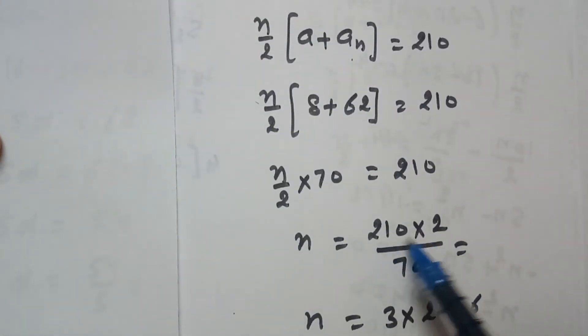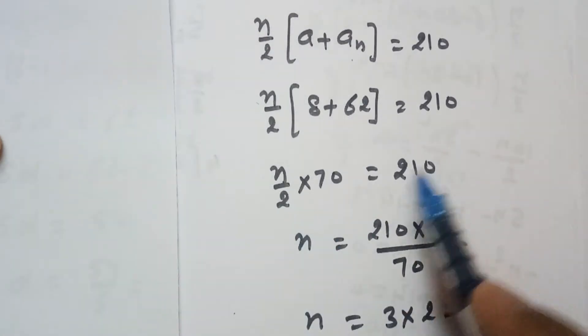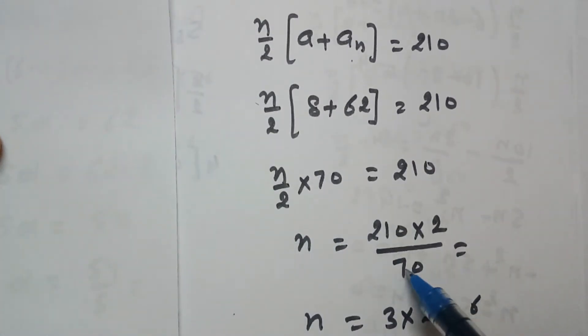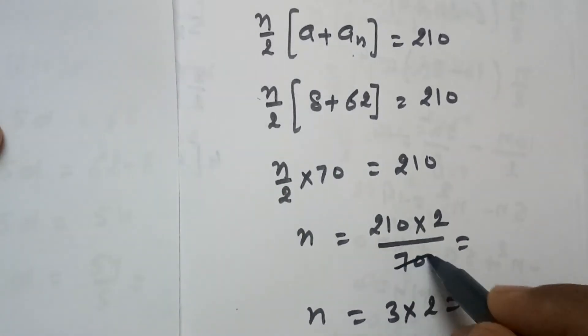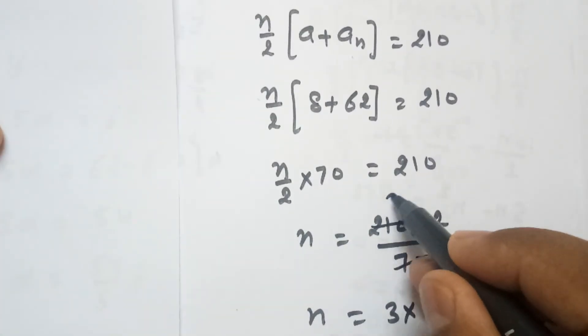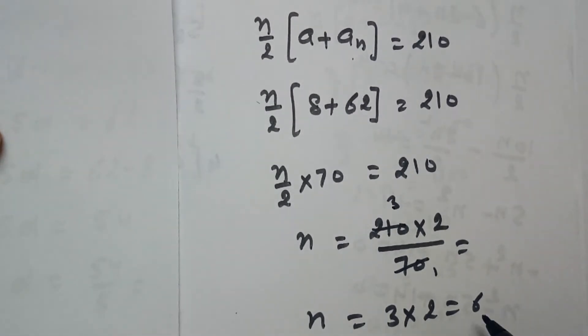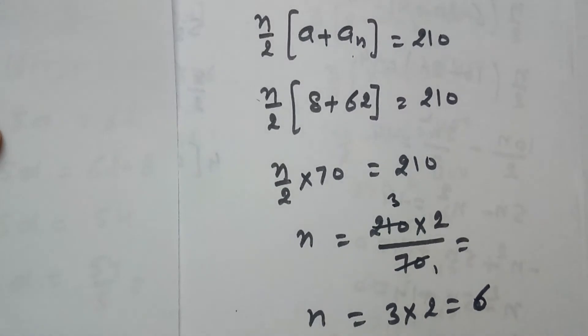So now N equals to 210 into 2, these 2 will multiply, that's how 70 will divide. So 70 into 1 is 70 and 70 into 3 is 210, so 3 times 2 are 6. So there are 6 terms in this AP.